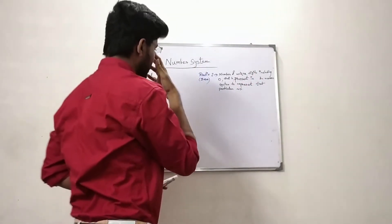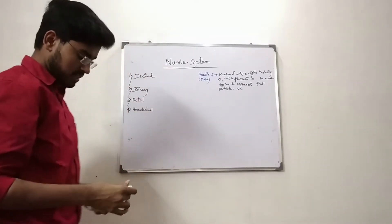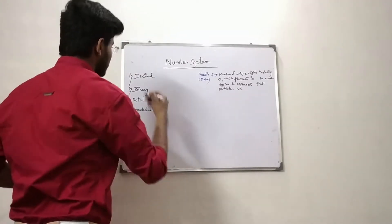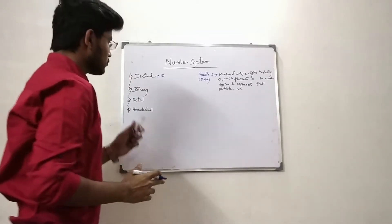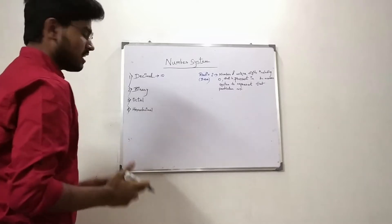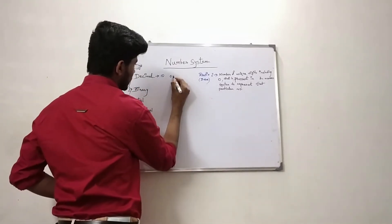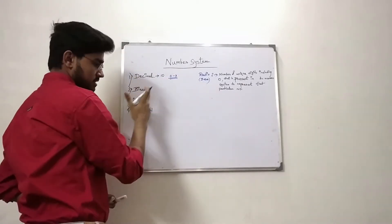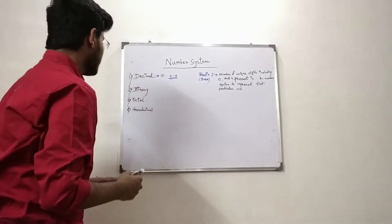So according to that, we have 4 types of number system. The first is the decimal number system. In the decimal number system, the radix or base is equal to 10. That means the number of unique digits including 0 that is present in the decimal number system is equal to 10. We already know that in the decimal number system we have 10 digits: 0 to 9. So these 10 digits are unique digits present in the decimal number system.